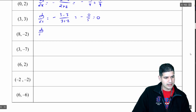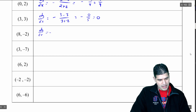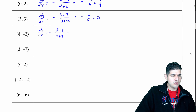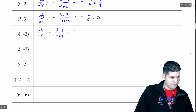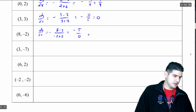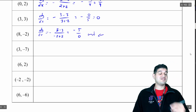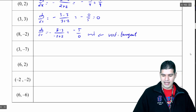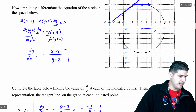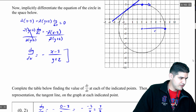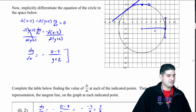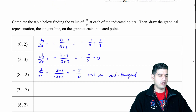Now we've got another one: dy/dx equals negative (8 minus 3) in the numerator and (negative 2 plus 2) in the denominator. So we're going to get negative 5 over 0, which is undefined. And remember, if it's undefined, we have a vertical tangent line. So let's see that happening at the point (8, negative 2) — right there — and we've got a vertical tangent line happening.